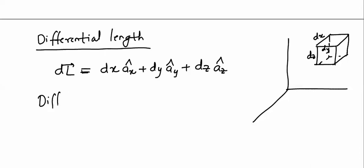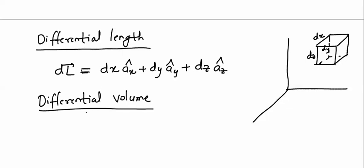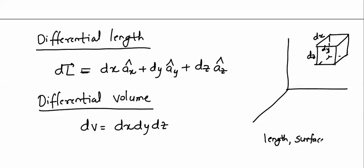Next, we consider differential volume. The volume of the differential cube is DV = DX × DY × DZ. Remember that differential length and differential surface are vector quantities — they have directions and unit vectors attached to them — whereas volume is a scalar quantity. Therefore, for differential volume, we will not have any unit vector attached.